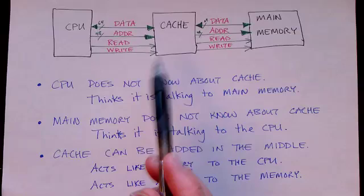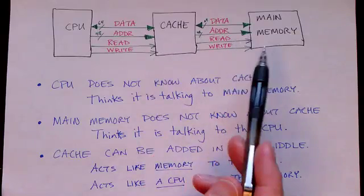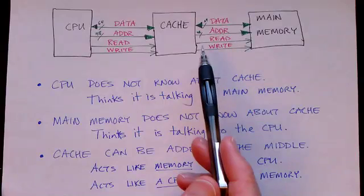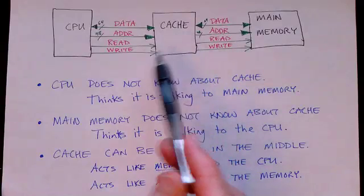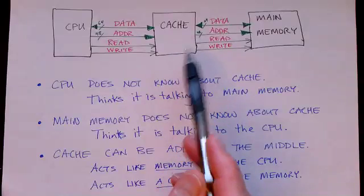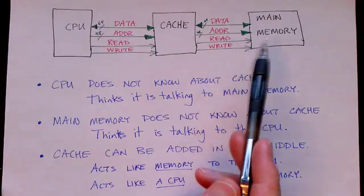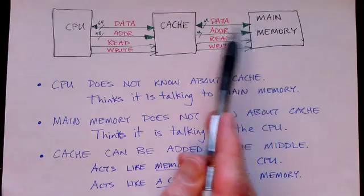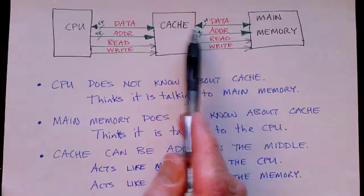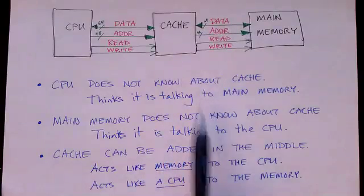The main memory doesn't know that it's talking to the cache. It thinks it's talking to the CPU. So the cache basically acts like a CPU and it can send address and read and write commands to the main memory, which then can supply data in the case of a read or accept data in the case of a write.